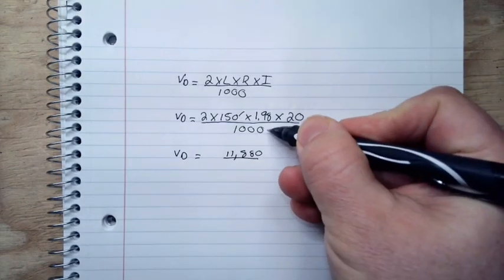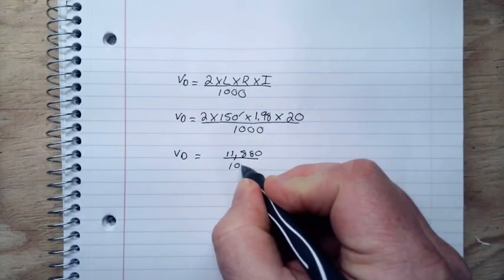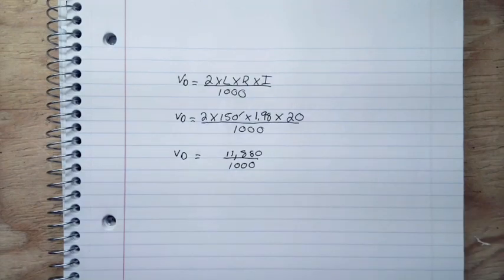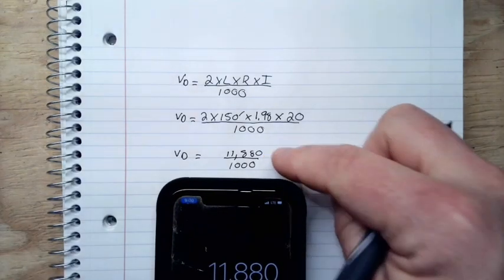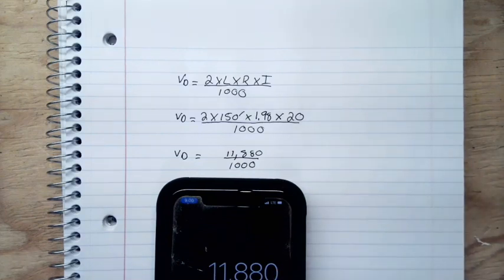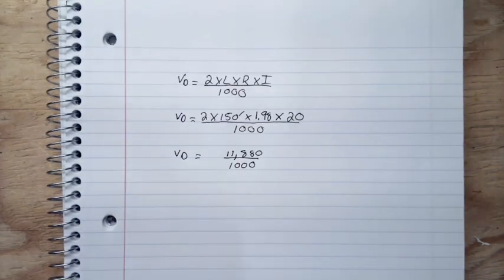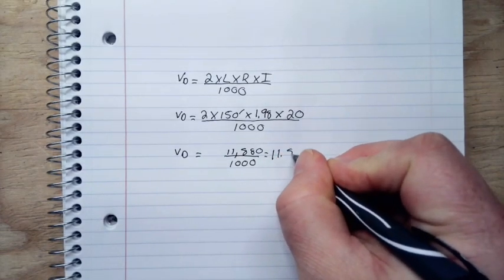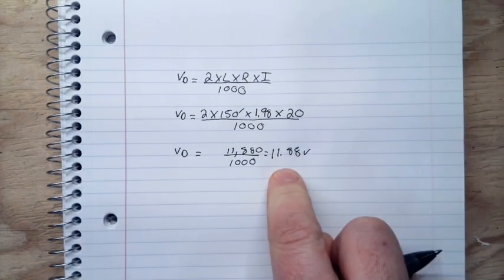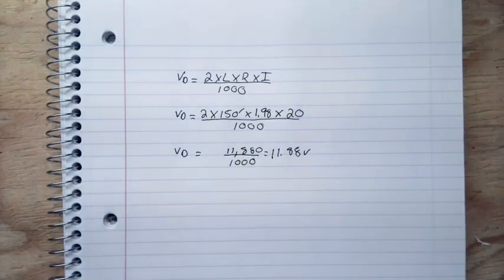And we have to take this 1,000 down now because we still have to divide that by 1,000. So now I'll bring this back up. I'm going to do 11,880 divided by 1,000 equals 11.88. So that'll be 11.88 volts. The correct answer for your first problem is 11.88 volts.